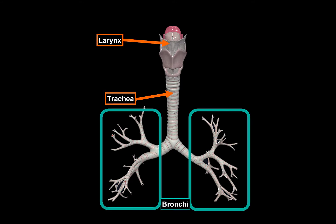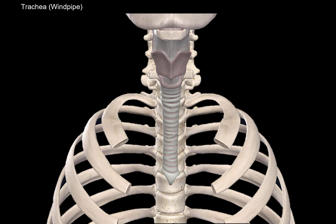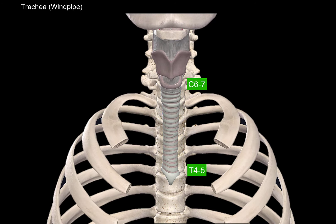Let's remove the Bronchi to focus on the anatomy of the Trachea. Another name for the Trachea is a windpipe, as it's a tube responsible for directing the air into and from the lungs. The Trachea can be between 9–15 cm long and roughly about 2–2.5 cm in diameter. The Trachea goes from the 6th–7th cervical vertebrae down to the 4th–5th thoracic vertebrae.